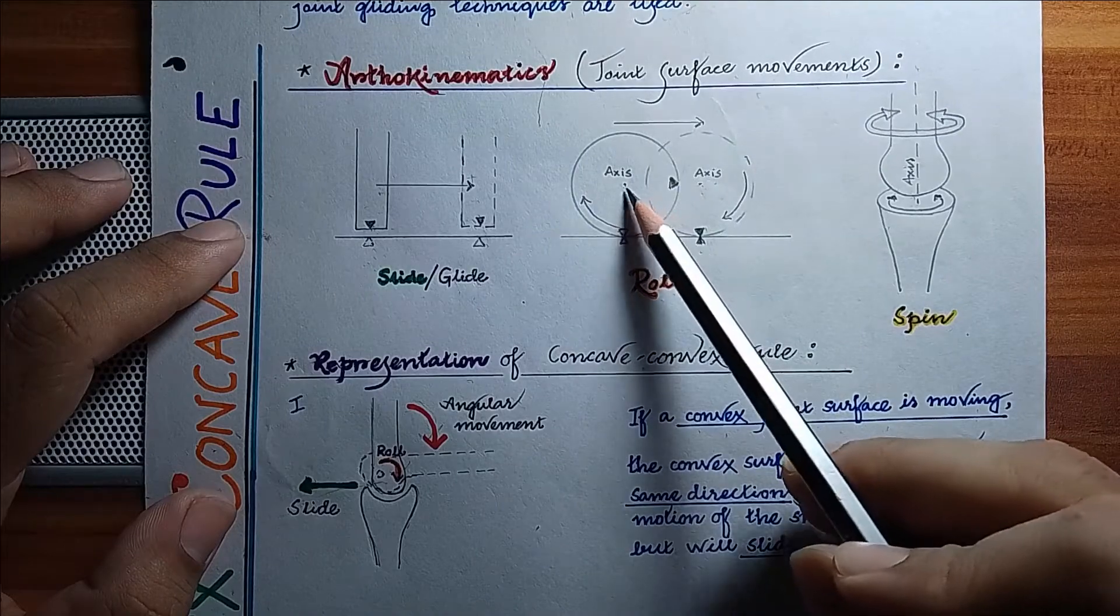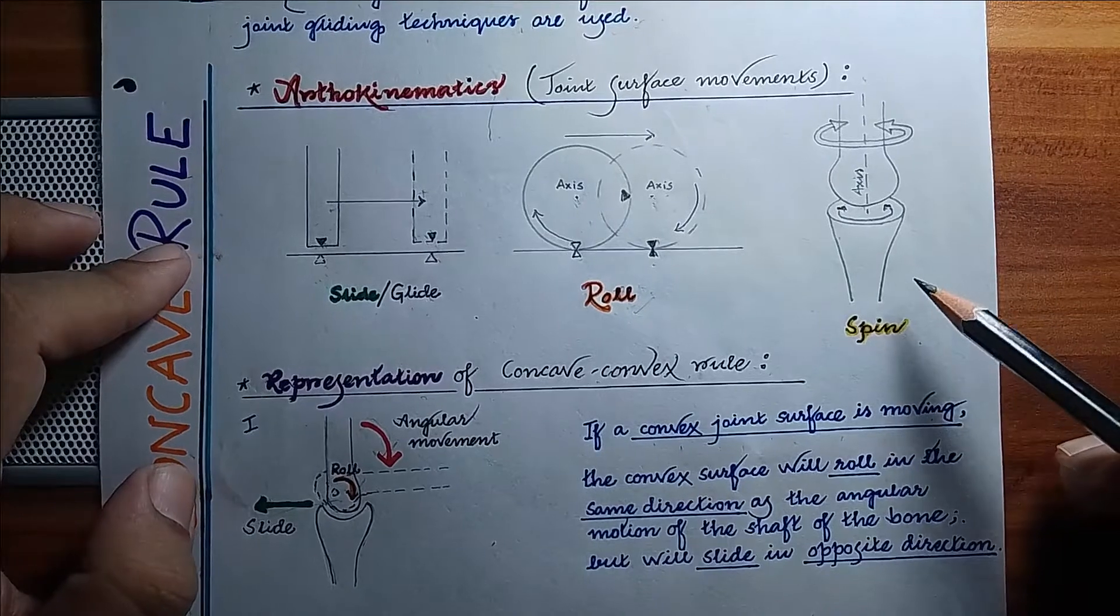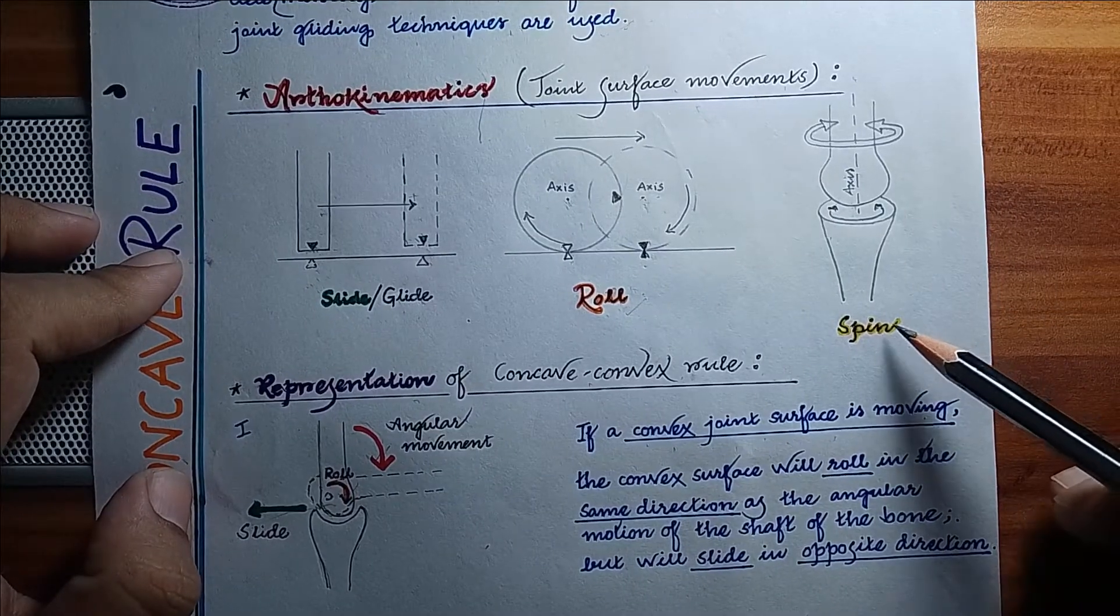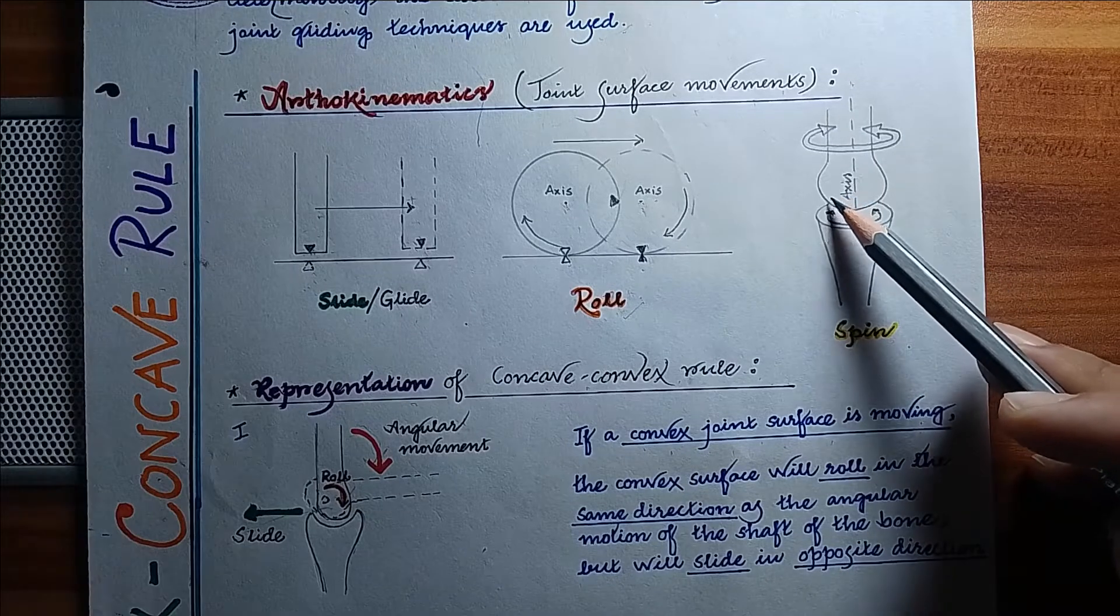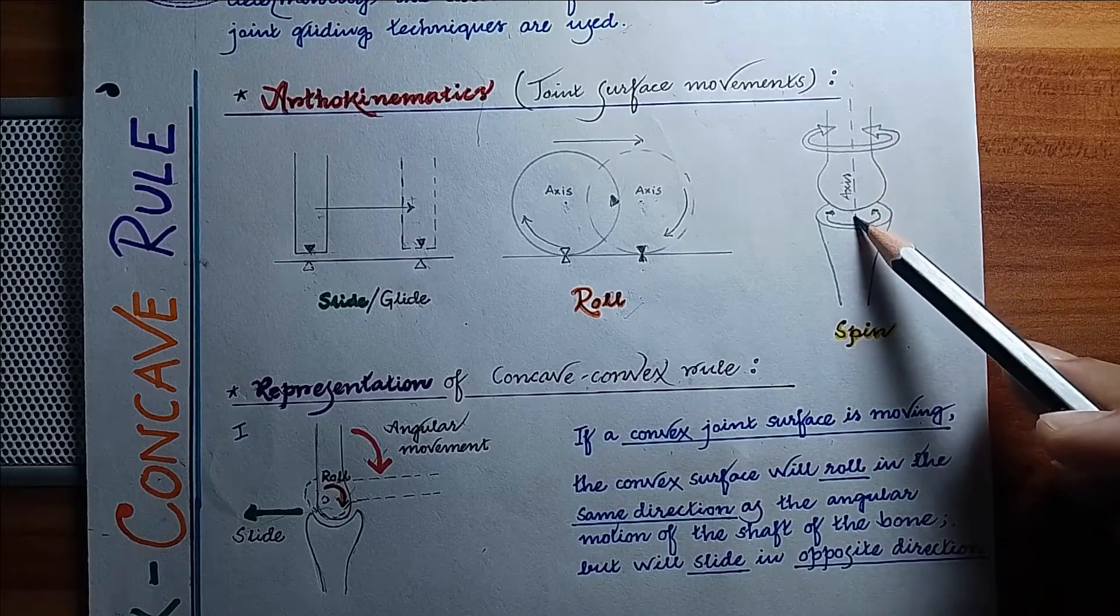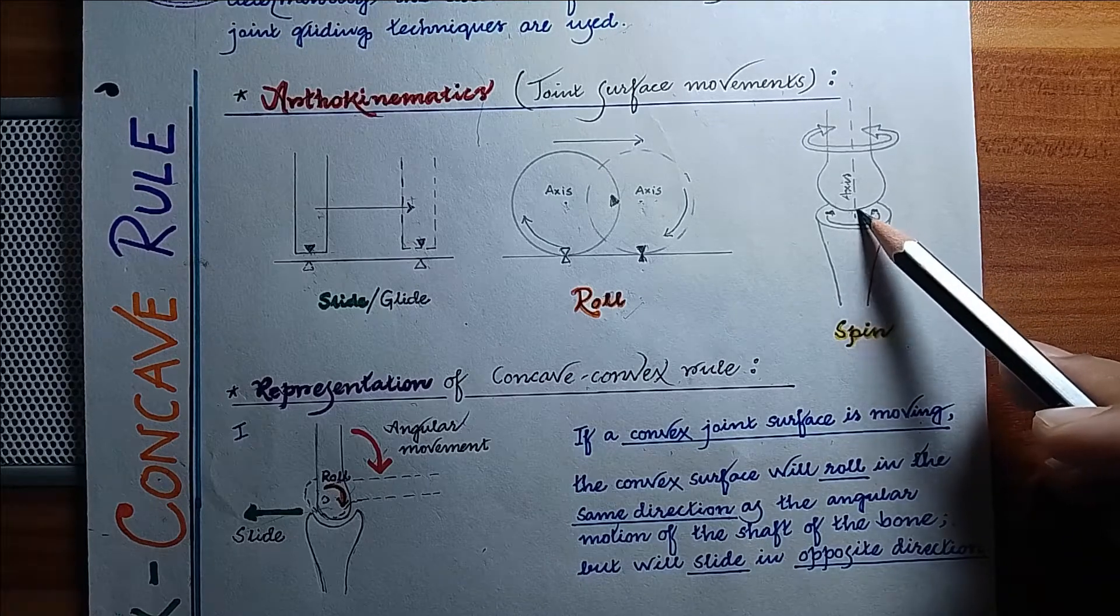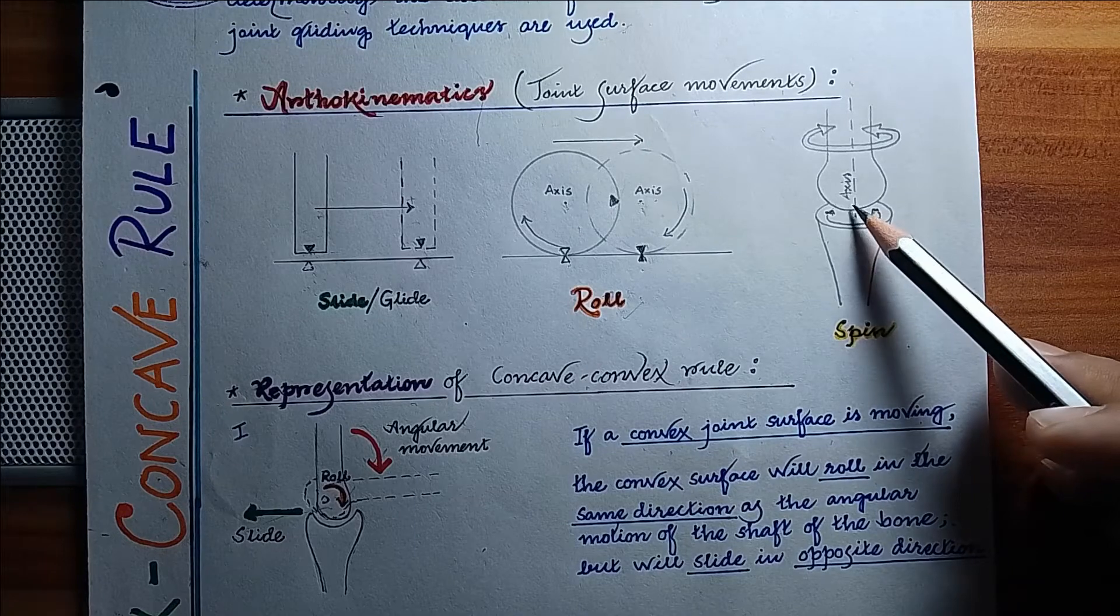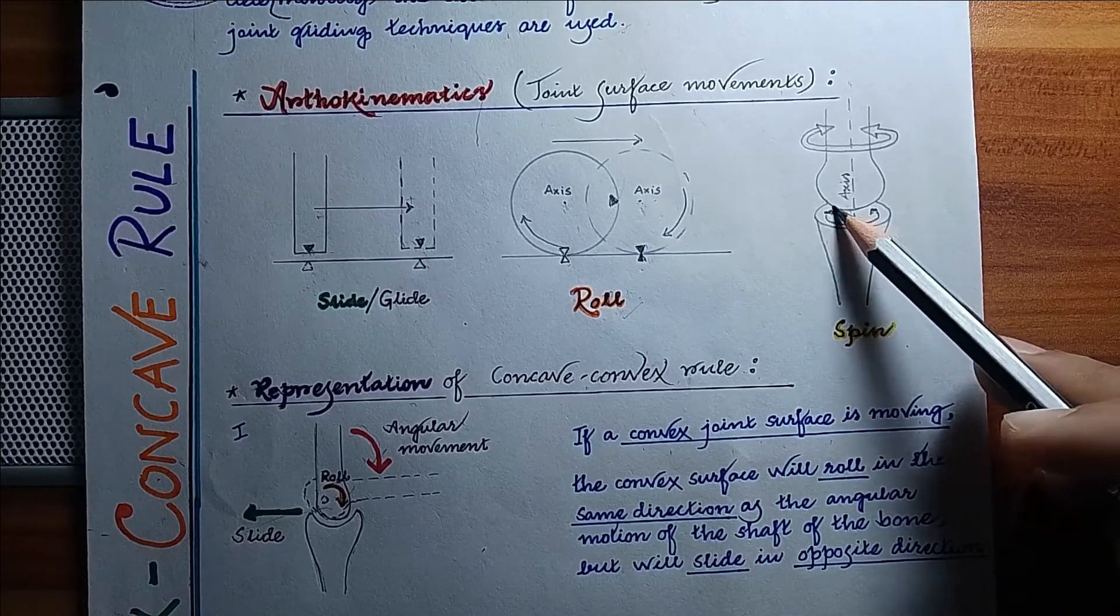A spin is a rotatory motion in which all the points on the moving surface rotate around the fixed central axis. The points on the moving surface closer to the axis will travel a smaller distance than the points further from this axis. So the point here will travel less distance than the point here.